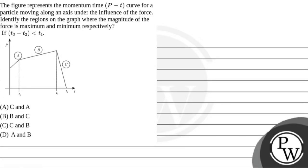The question says: the figure represents the momentum-time curves for a particle moving along an axis under the influence of force. Identify the regions on the graph where the magnitude of the force is maximum and minimum respectively, given that T3 minus T2 is less than T1. The key concept here is momentum.